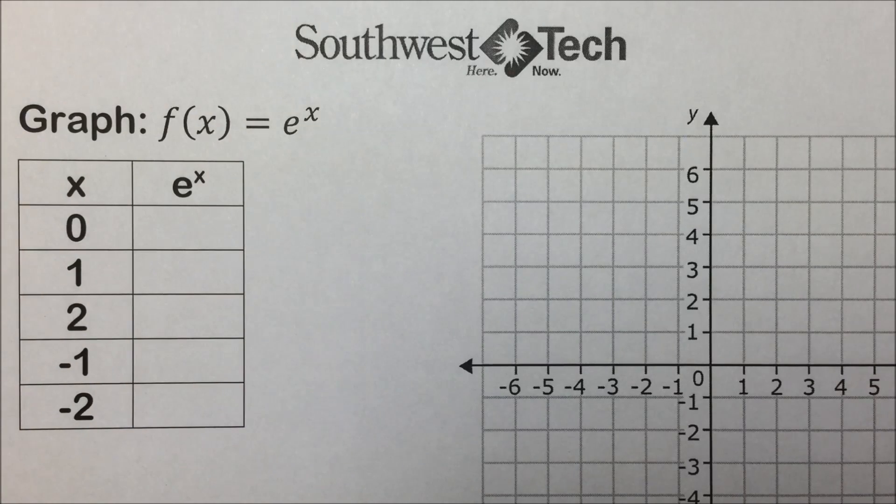In this first example, they're asking us to graph the function equal to e to the x. This is an exponential function with the base e, which has an approximate value of 2.7, and we'll use a calculator with an e to the x key to find approximate values of this function.